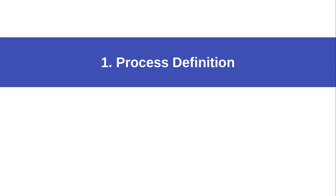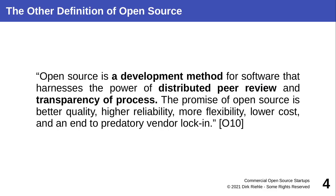The traditional definition of open source is a legal one relating to the intellectual property that is source code and then open source code. So you got all this talk about the open source licenses and how they define what open source is. However, in parallel to the evolution of open source licenses there was a development of open source as a development method, as an approach to collaboratively and in a distributed way developing software.